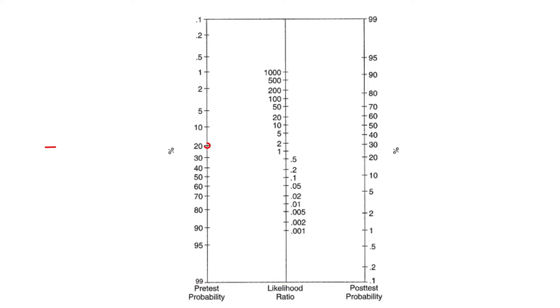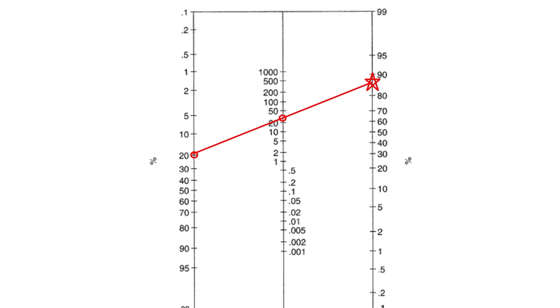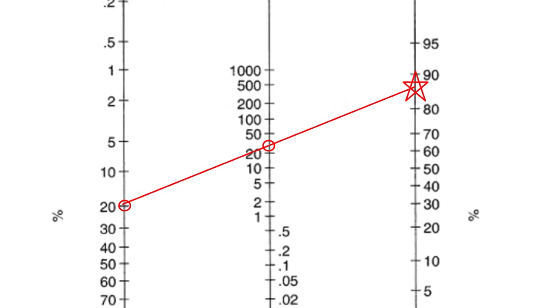First, mark the pre-test probability on the nomogram. Then mark the likelihood ratio. Lastly, draw a straight line between the pre-test probability mark and the likelihood ratio mark to find the intersection on the post-test probability line. You will see that the post-test probability is about 88%.